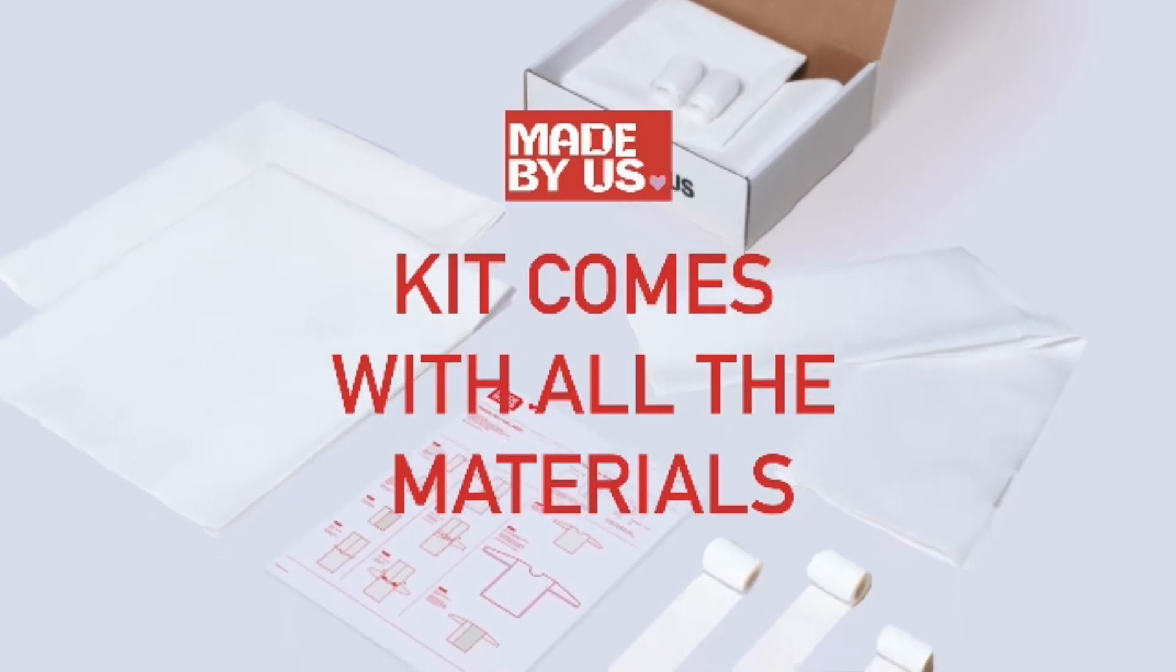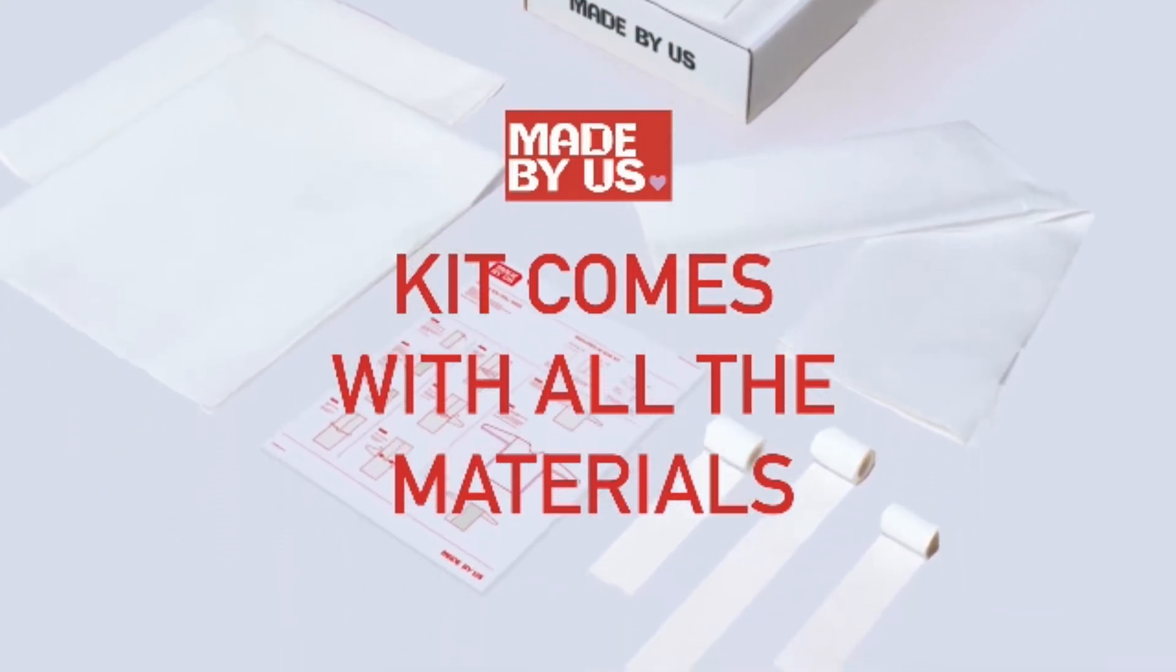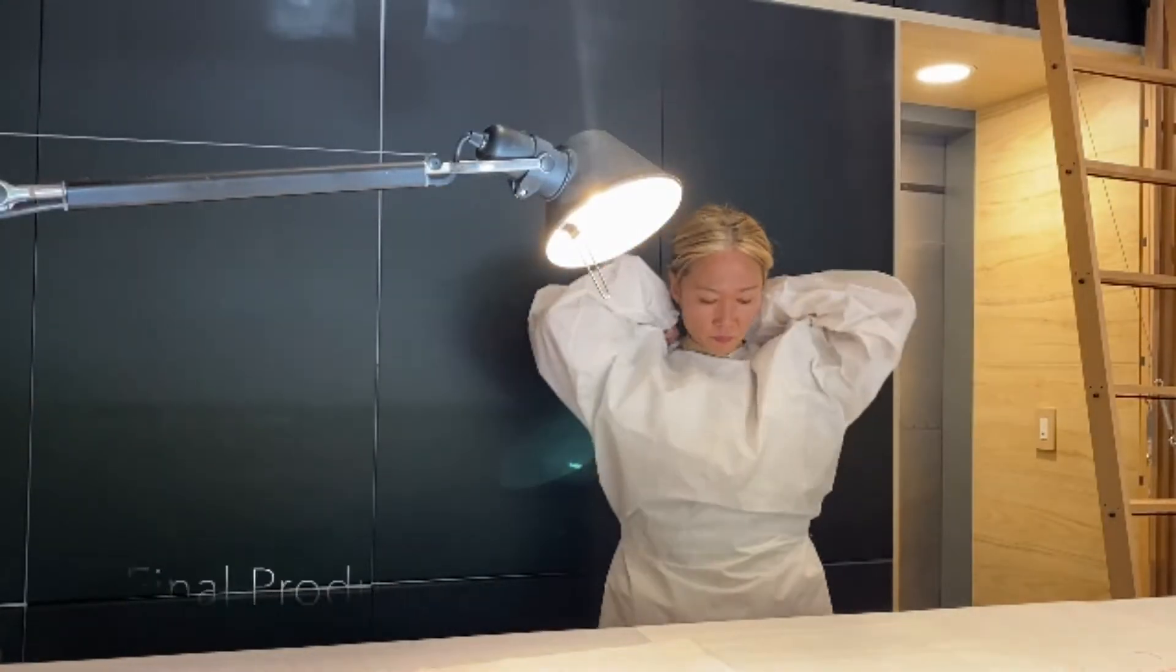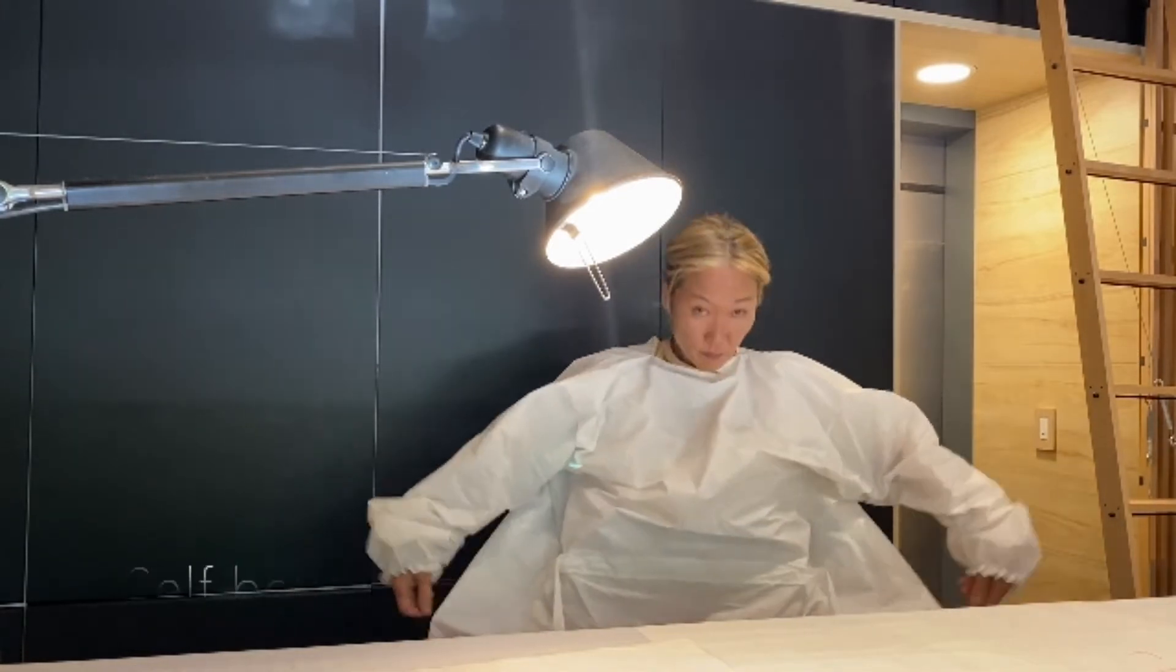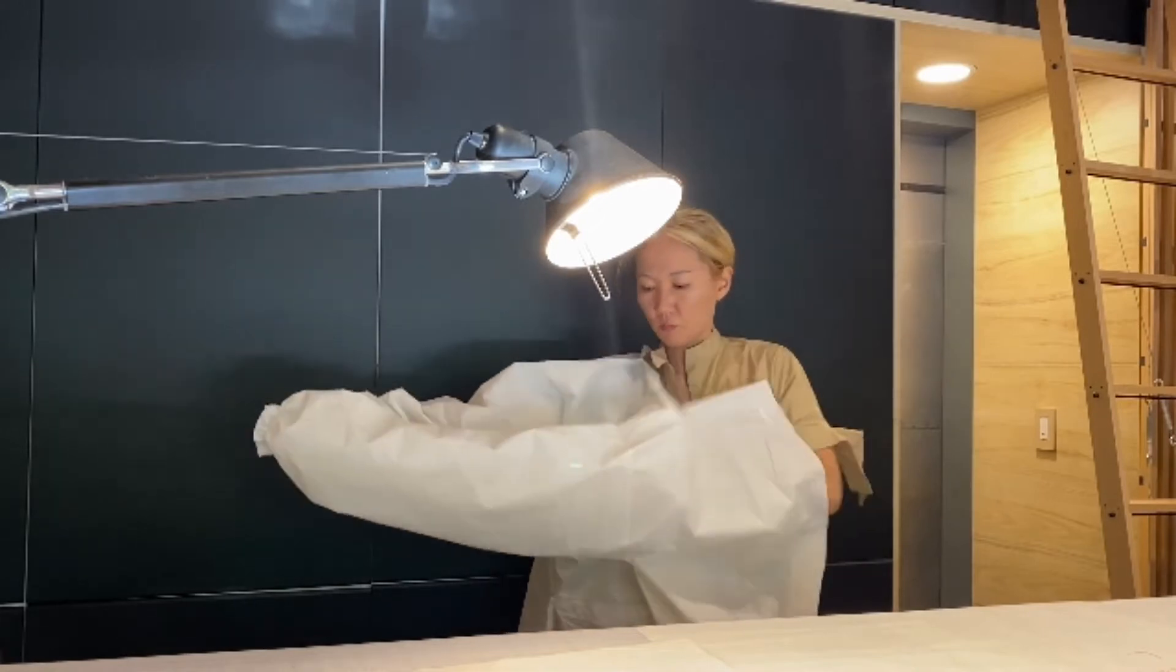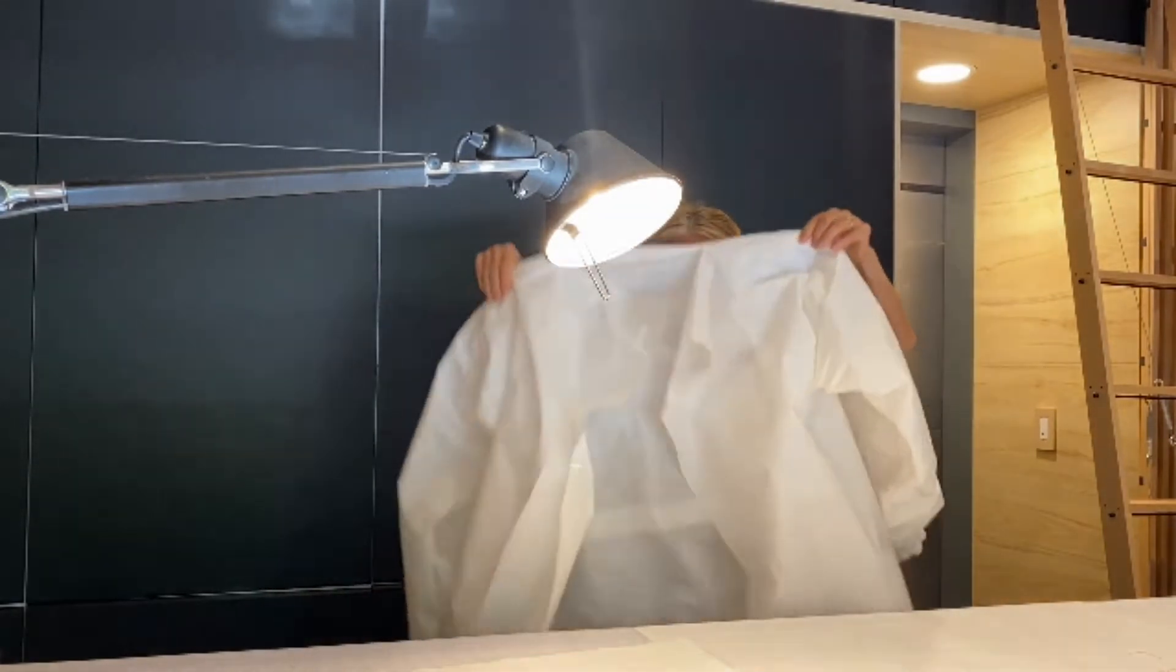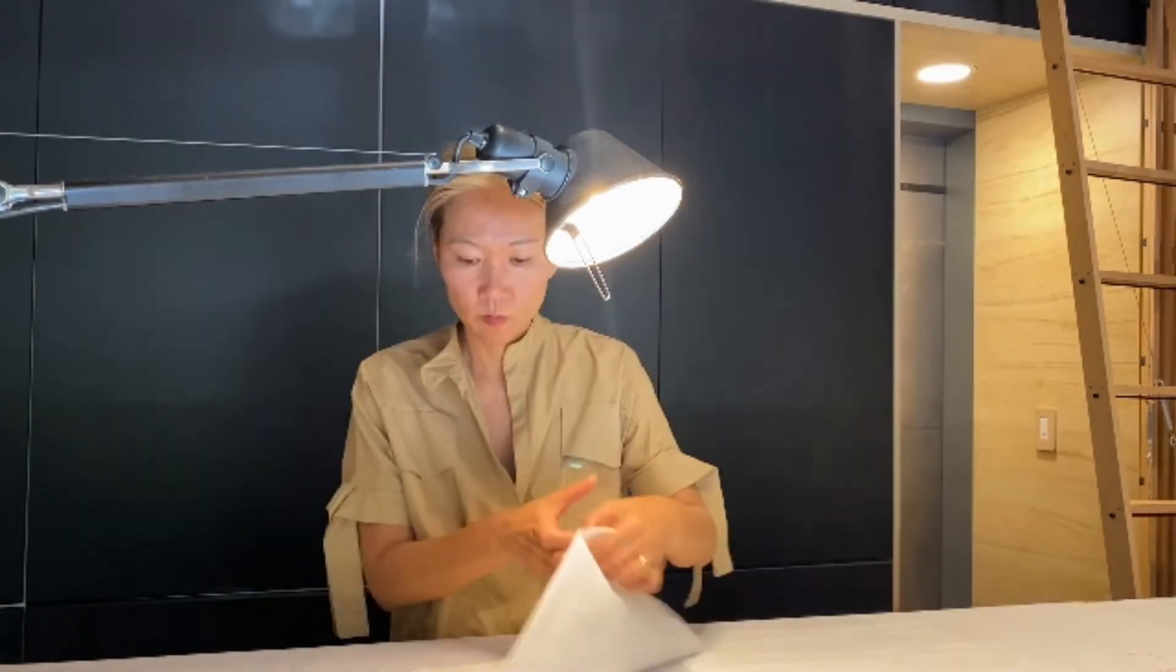You'll also have YKK hook and loop materials. So here's a look at the final product. We're going to be making this today. It takes about an hour to sew. We have a self-belt, and this is all made out of disposable fabrics. The back will be open and the front will have that belt that we showed in the beginning.